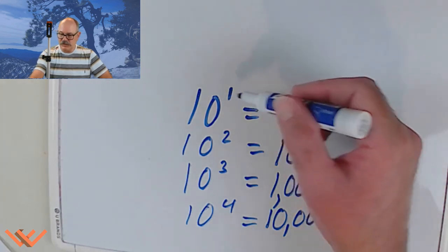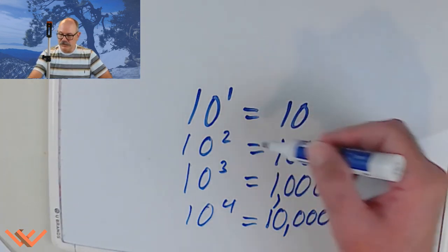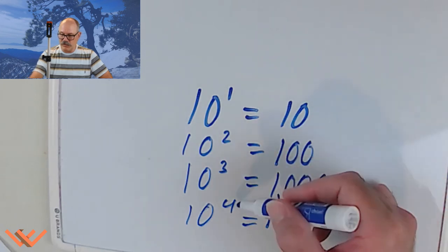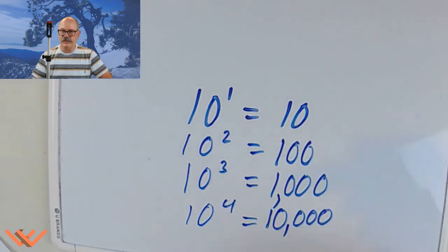So notice that it's 1, 0, 1, 0. 2, 2 zeros. 3, 3 zeros. 4, 1, 2, 3, 4 zeros. There we go.